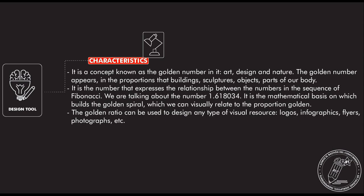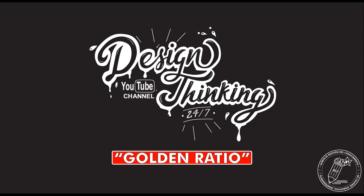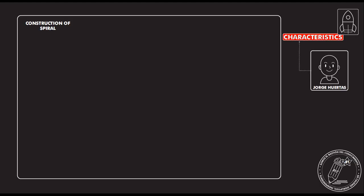It's also complementary to the design thinking methodology and any other kind of visual aid to design. When we talk about the golden ratio, it is very important that we understand the extraction of the spiral. This spiral is the main component to develop and work with, and we start with a square that is exactly the same in height and length.